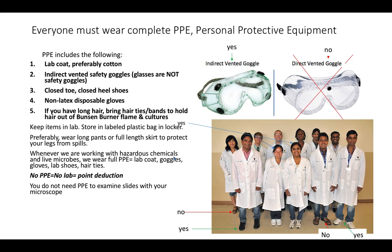When working with hazardous substances we must have full PPE - personal protective equipment. This includes a lab coat, as long as possible with long sleeves, preferably cotton, since some synthetics can melt if they catch fire and cause worse burns. We need indirect vented safety goggles - glasses are not safety goggles. Our bookstore also offers direct vented goggles, but those don't provide protection from liquid hazards that might drip through the holes, so you must have indirect vented goggles.